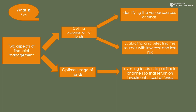Ki paisa kahan kahan se aayega — sources kya rahenge, kaun se long term sources rahenge, kaun se short term sources rahenge. Aap shares issue karke money collect karoge, debentures ki help se money collect karoge, public deposits use karoge, bank se loan loge, other financial institutions se loan loge — is tarah se aapne sources decide karne hain. The second step is evaluating and selecting the sources with low cost and less risk. Jab aapne sources ko identify kar liya, to ab un sources ko evaluate karna hai.